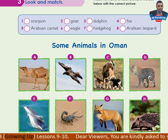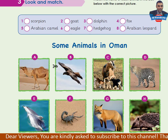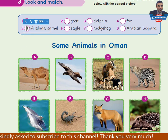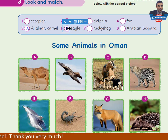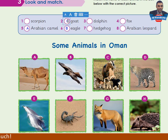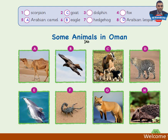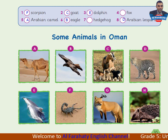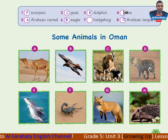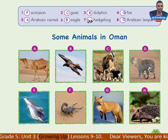Hello again, let's do the activity. Some animals in Oman. Number A: 5 — Arabian Camel. Number B: 6 — Eagle. Number C: Goat. Number D: Arabian Leopard. Number E: Dolphin. Number F: Scorpion. Number G: Fox. Number H: Hedgehog.